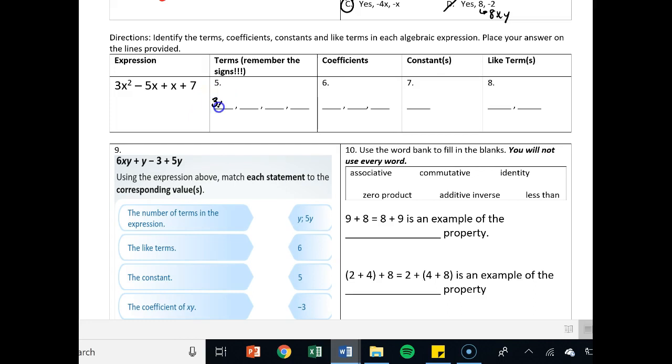So your terms: 3x squared, negative 5x. Make sure you include that negative. If you forgot to include that negative, you would be wrong tomorrow. x and 7. You do not need to put 1x. You just put 7. What are the coefficients? All the numbers attached to the variables. We've got 3, we've got negative 5, not just 5. And we've got 1, that invisible 1 right here.